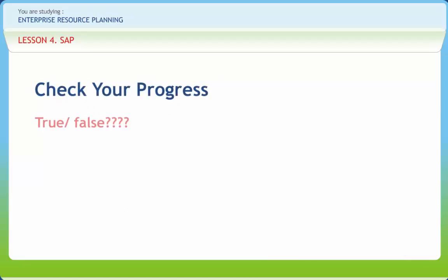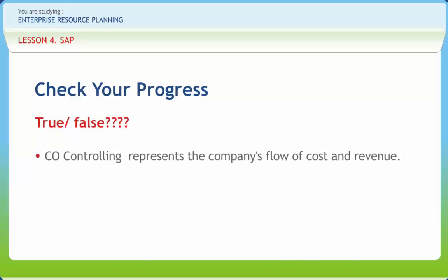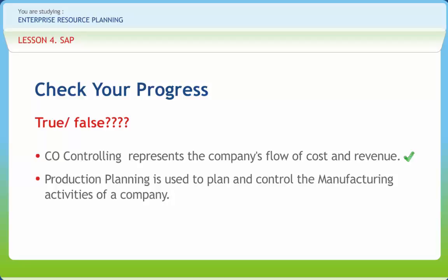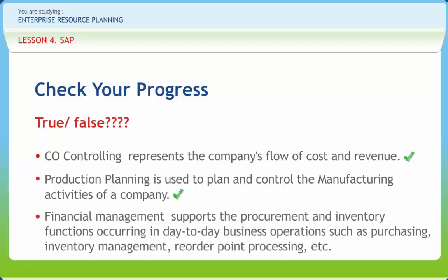Review questions: CO Controlling represents the company's flow of cost and revenue — Right or wrong? Right. Production Planning is used to plan and control the manufacturing activities of a company — Right or wrong? Right. Financial Management supports the procurement and inventory functions occurring in day-to-day business operations such as purchasing, inventory management, reorder point processing, etc. — Right or wrong? Wrong.